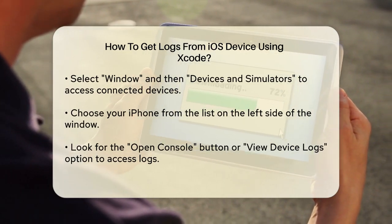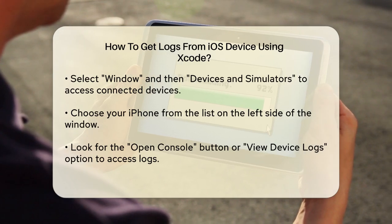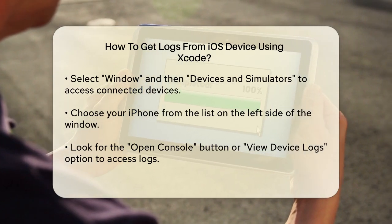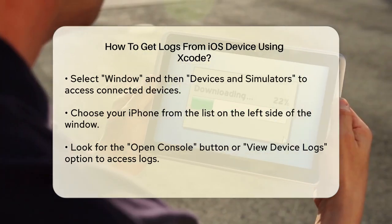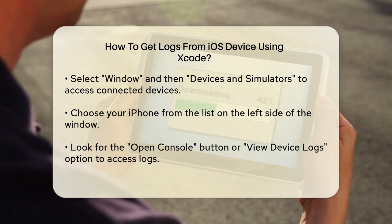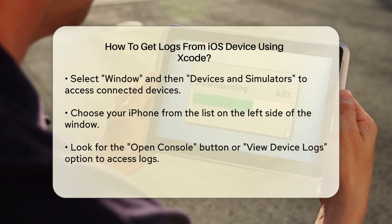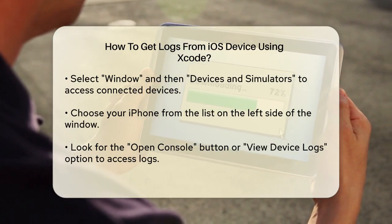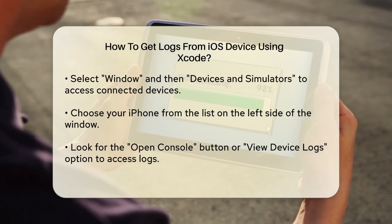Click on either of these to view the logs. To get specific app crash logs, click on the up triangle at the bottom of the screen to view device logs. Here, you'll see a list of logs, including crash logs.